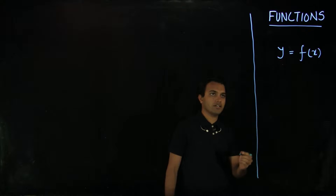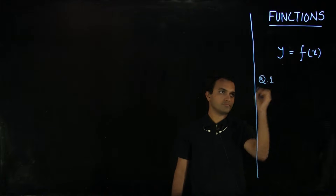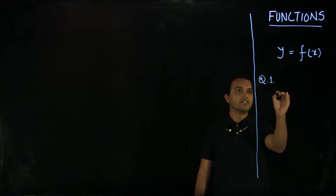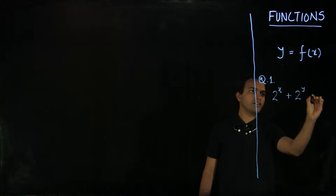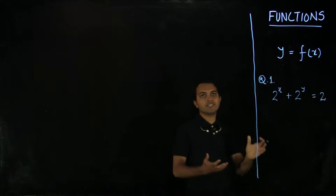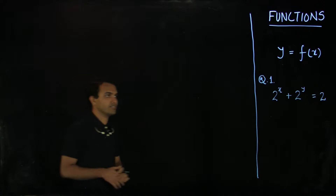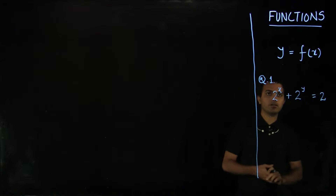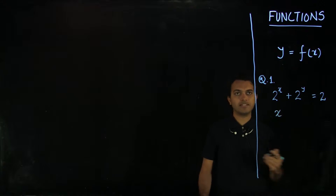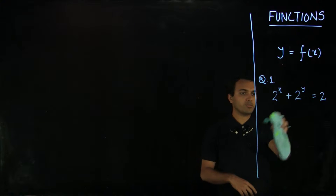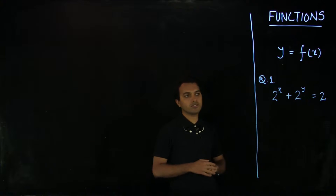Let us take an example from a previous exam. We are given an equation of the form 2^x + 2^y = 2. This equation by itself is not a function because it is an equation in two variables. This is an equation you typically haven't encountered much, since the equations we usually see are linear or polynomial equations. But here we have an equation with variables x and y, and we can define a function using this equation.